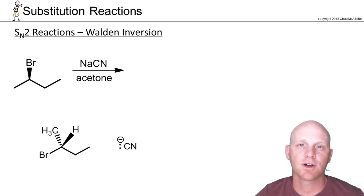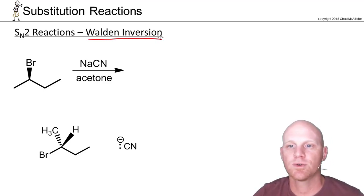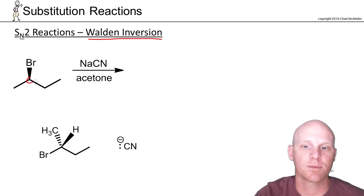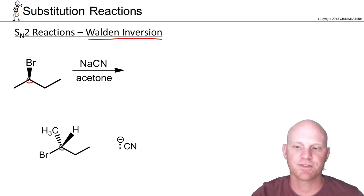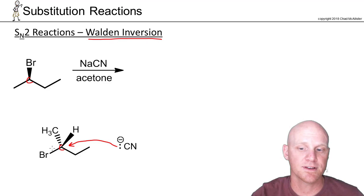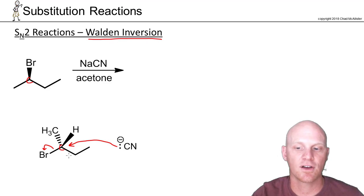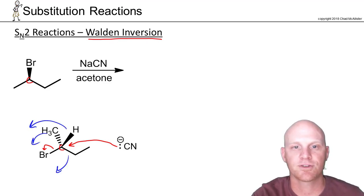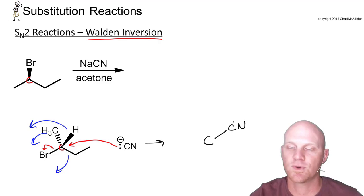The stereochemical consequence of backside attack in SN2 is called Walden inversion, or inversion of configuration. When the SN2 reaction occurs at a chiral center — as it does here with a cyano nucleophile attacking a carbon bearing a bromine leaving group — inversion of configuration results.